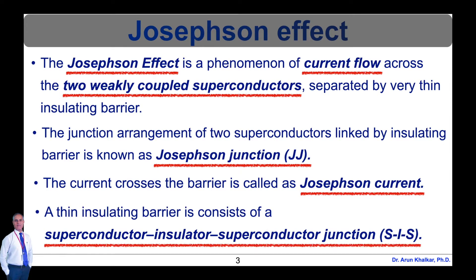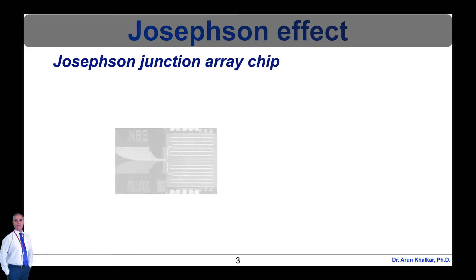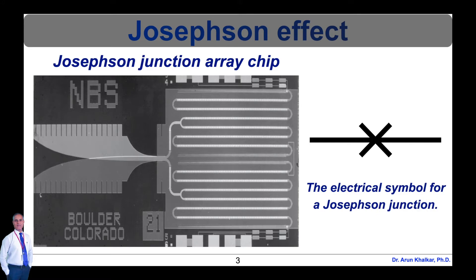A short section of non-superconducting metal SNS, or a physical constriction that weakens the superconductivity at the point of contact SSS. As shown in this diagram, a Josephson junction array chip developed by the National Institute of Standards and Technology has a standard hold, whereas the electrical symbol for Josephson junction is shown here.